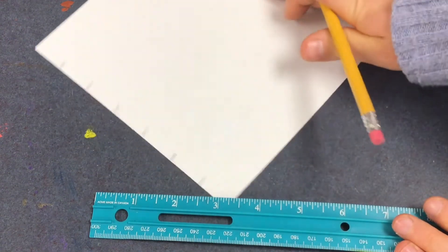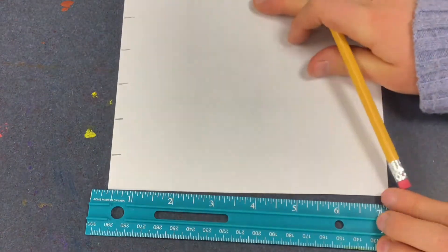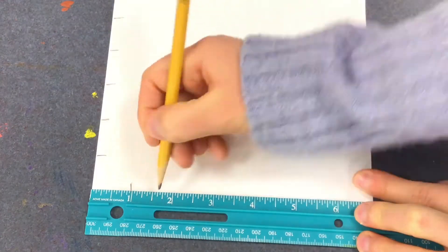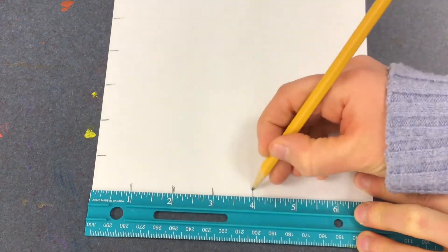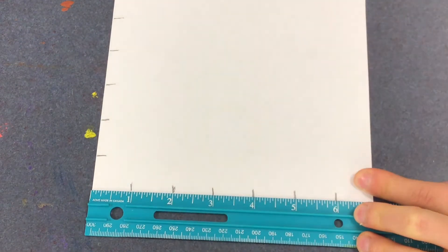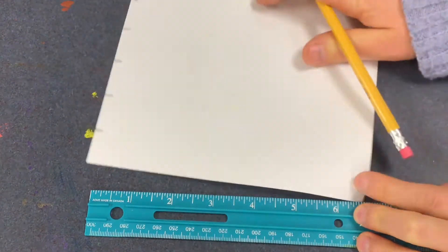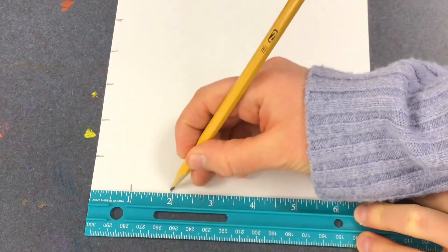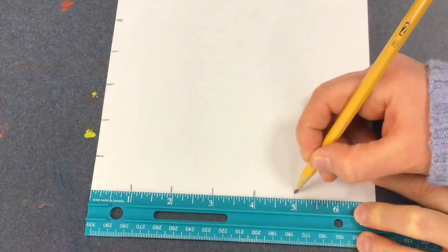Now turn your paper to another edge and repeat the same process. You will repeat this process with all four edges of the paper. Making op art requires precision, so this is why using a ruler is very important.